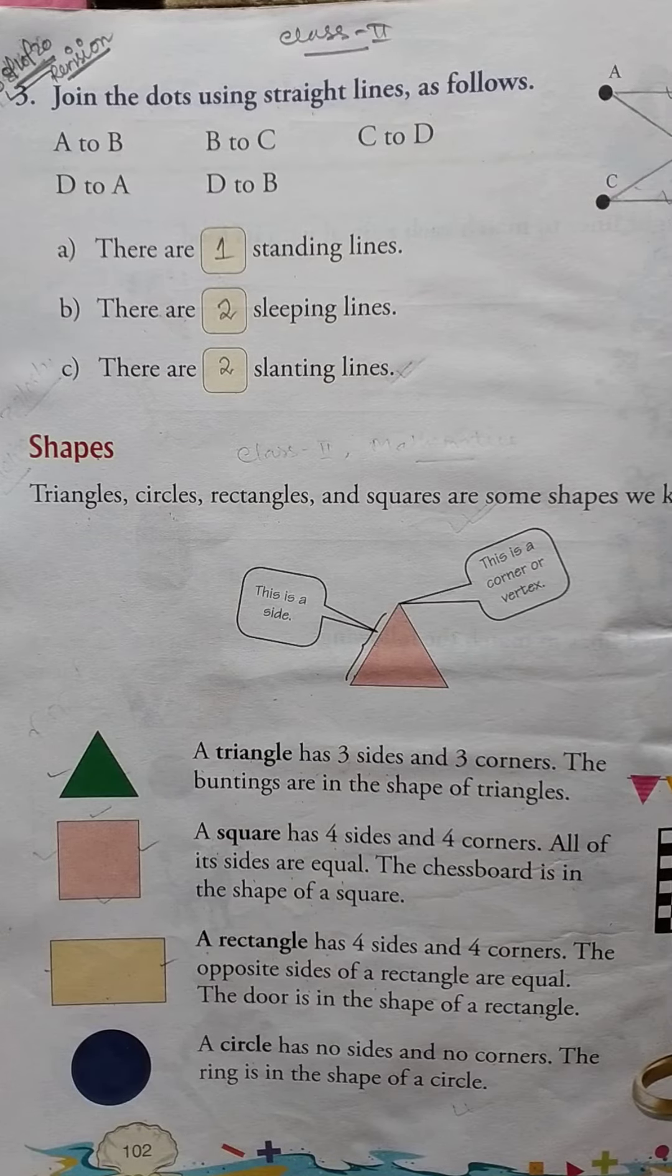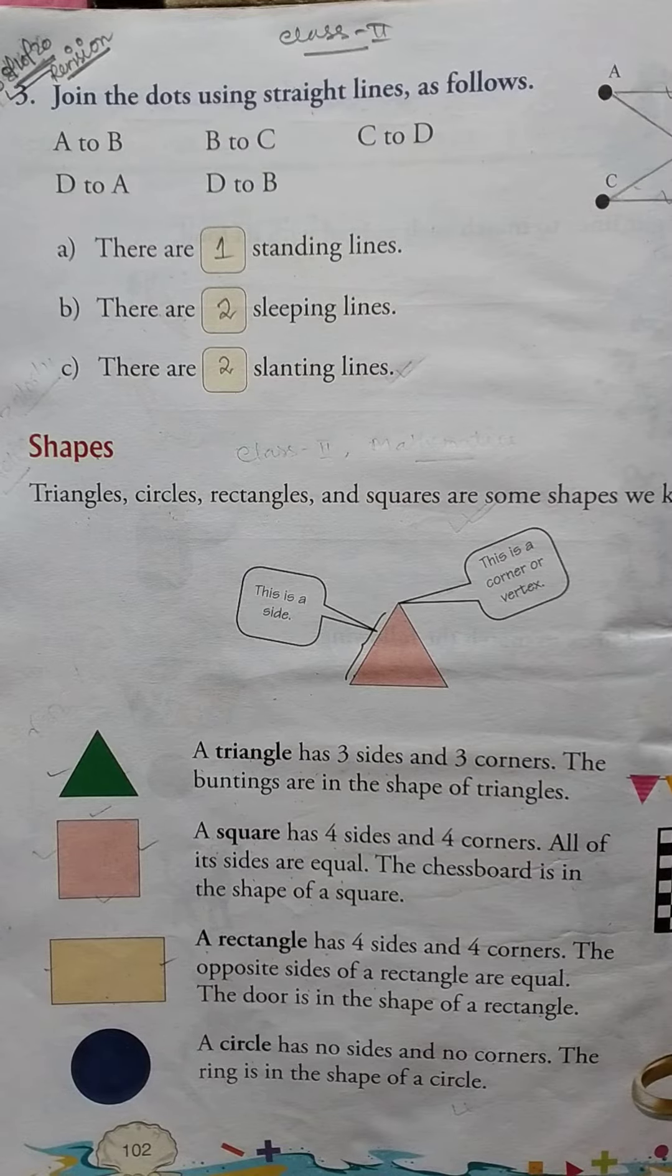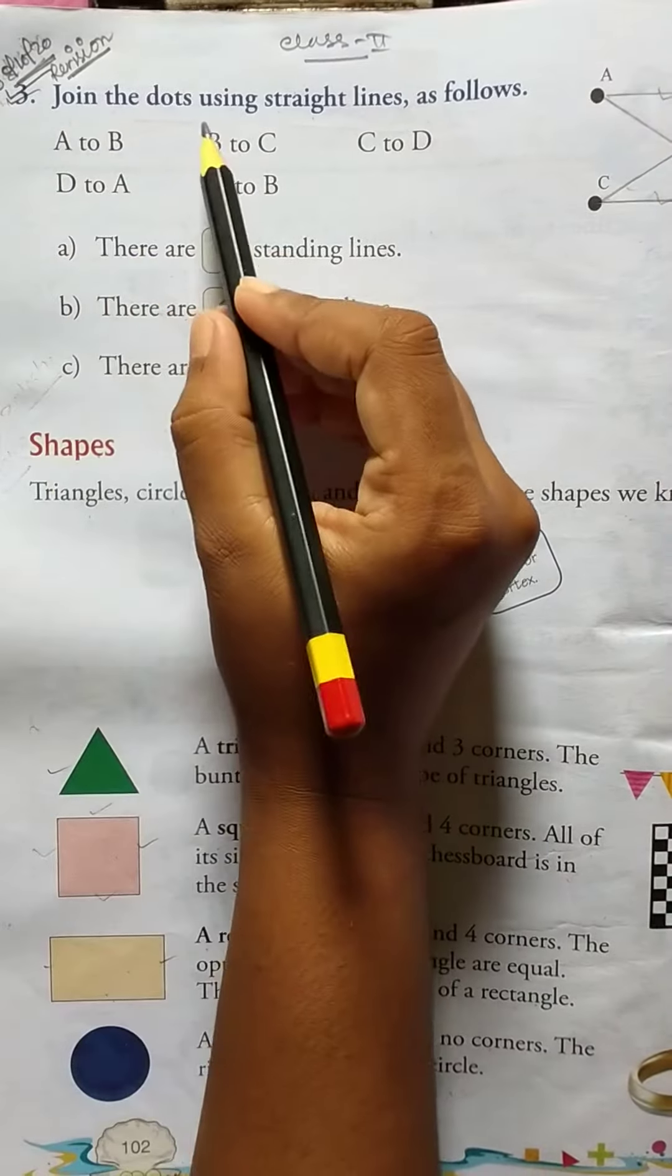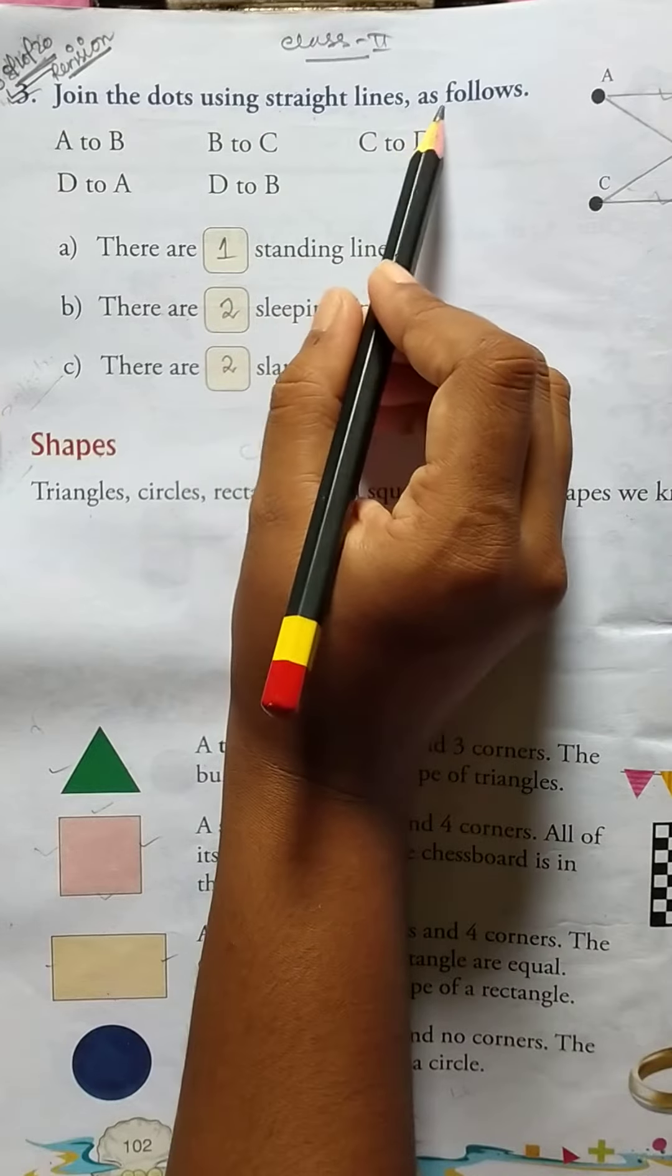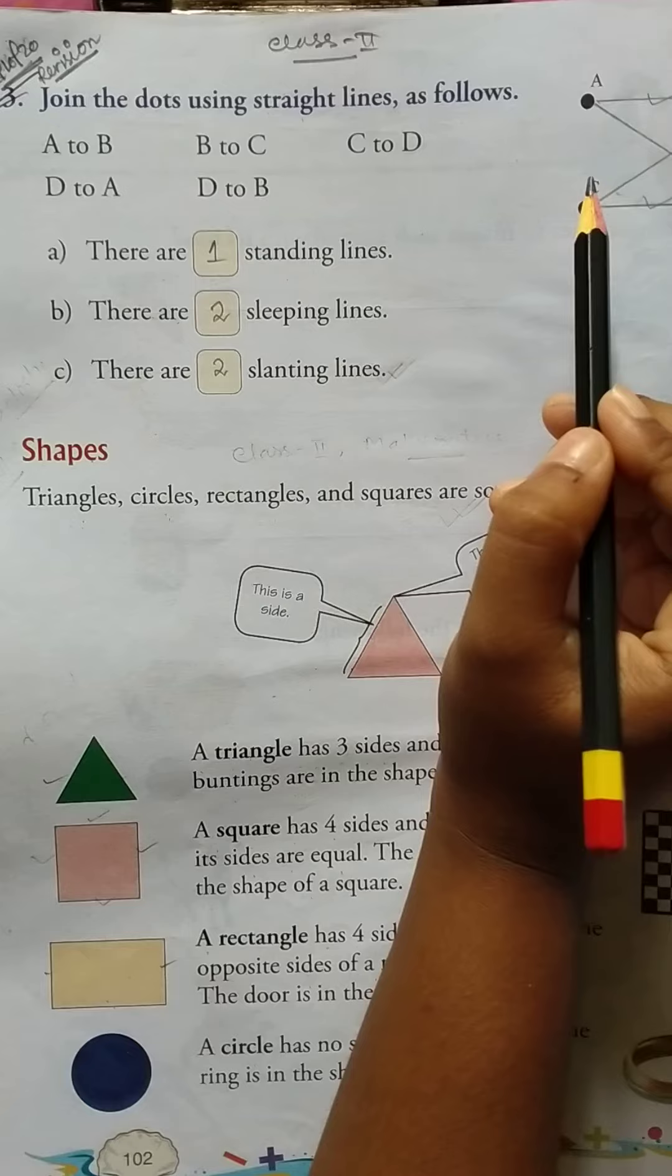Students, good morning. Class two mathematics, date 8th of October 2020, revision class. Okay, so let's start. Join the dots using straight lines as follows. Okay, so here A to B, B to C, C to D, D to A.